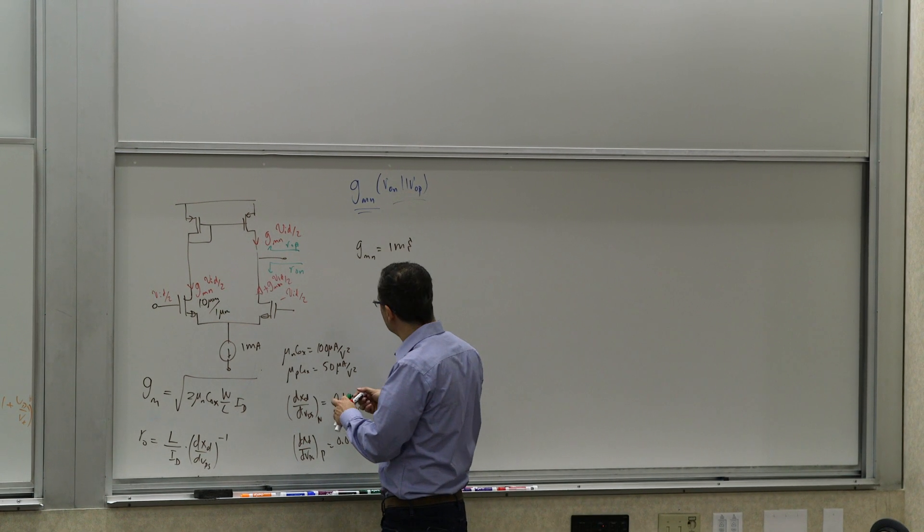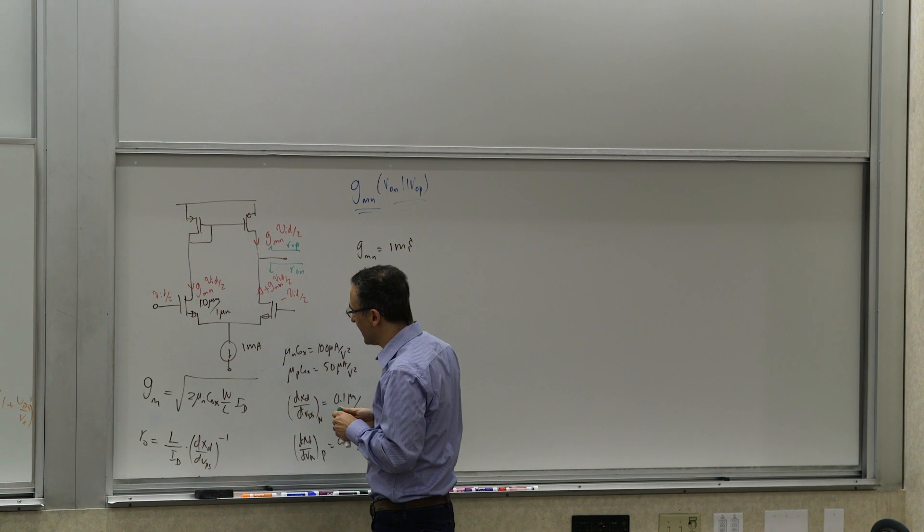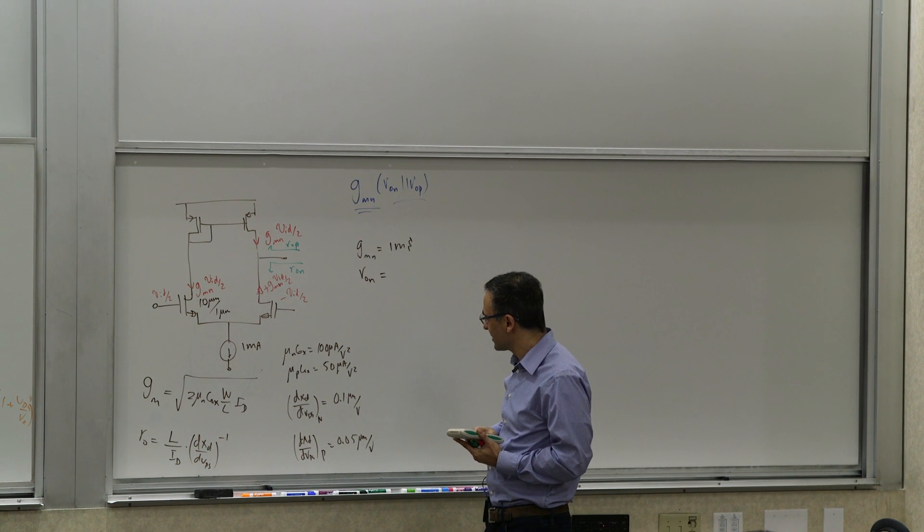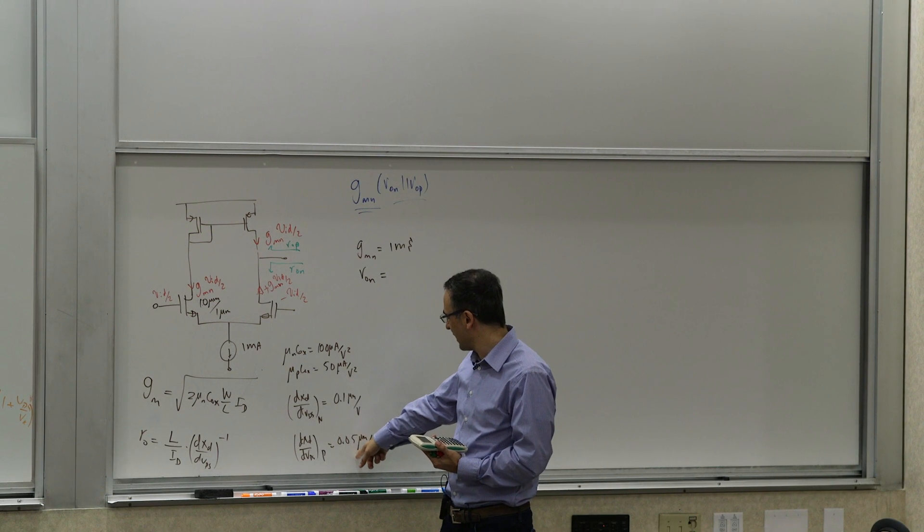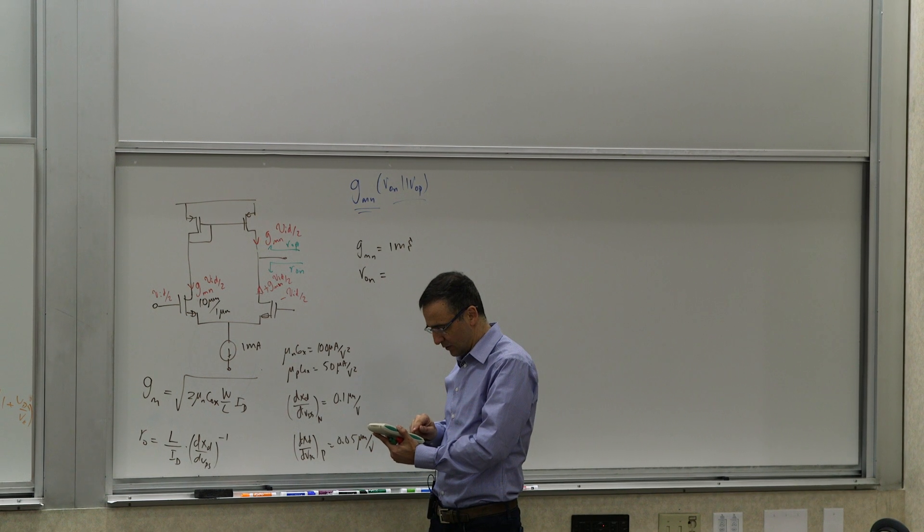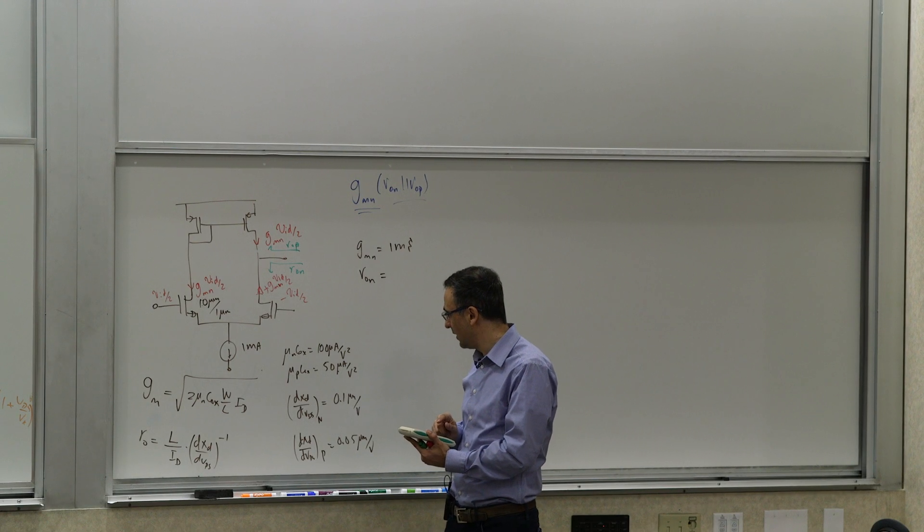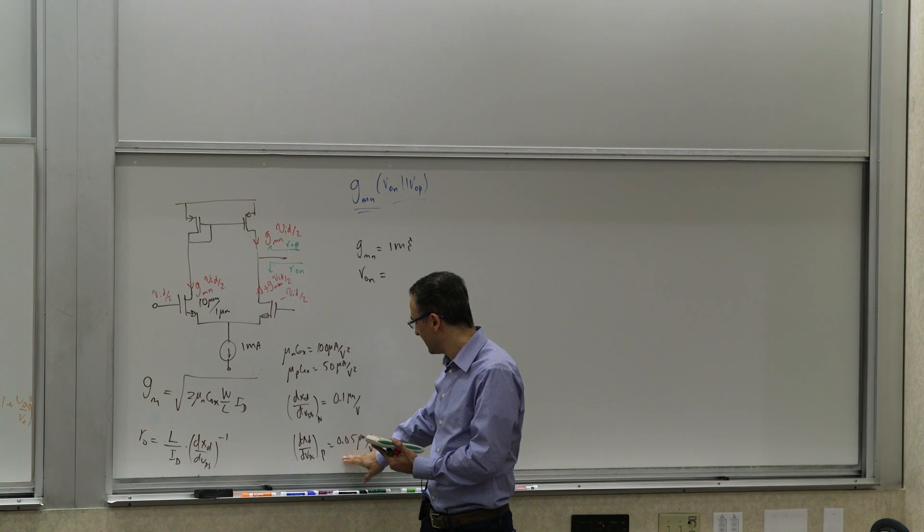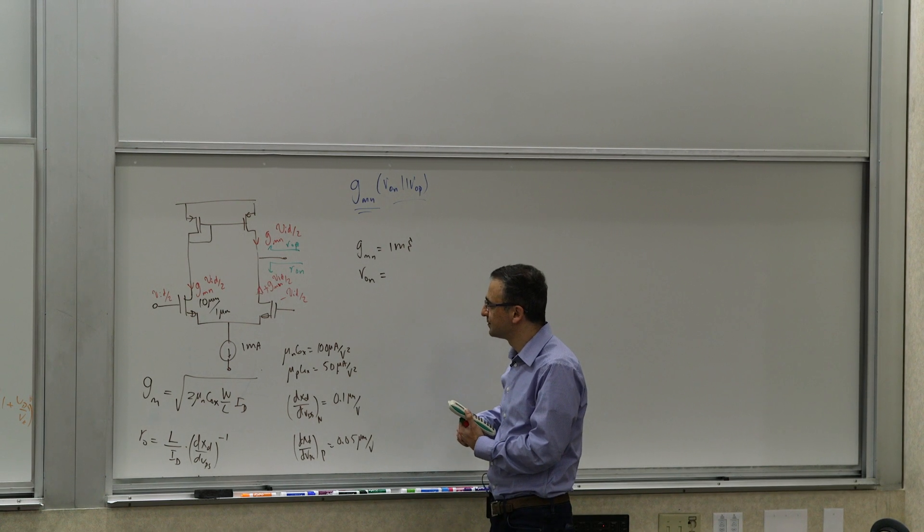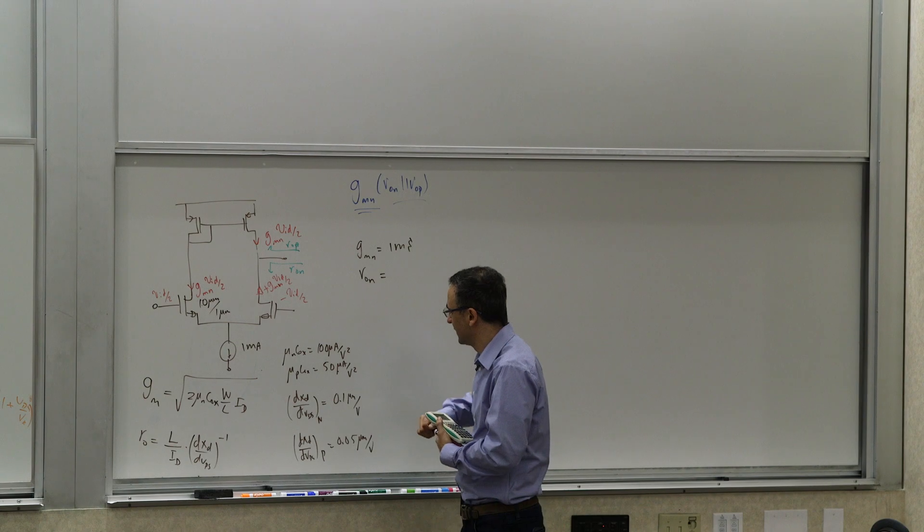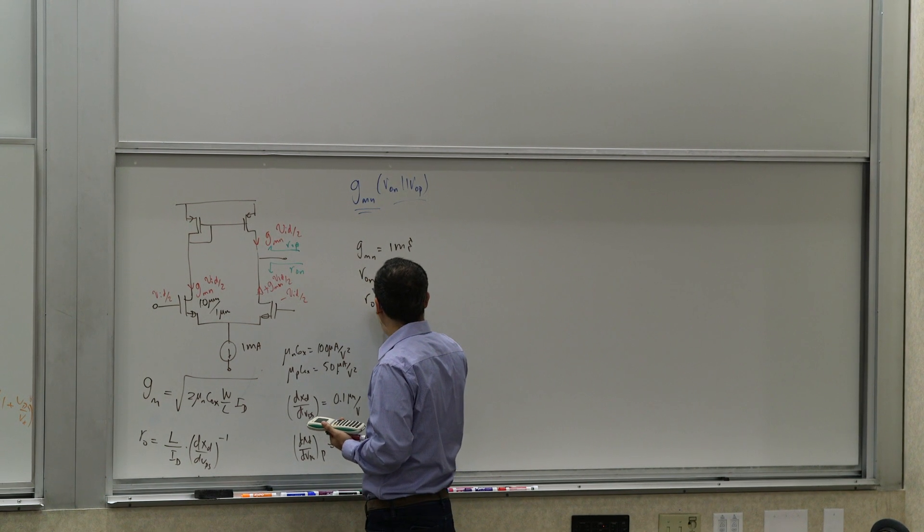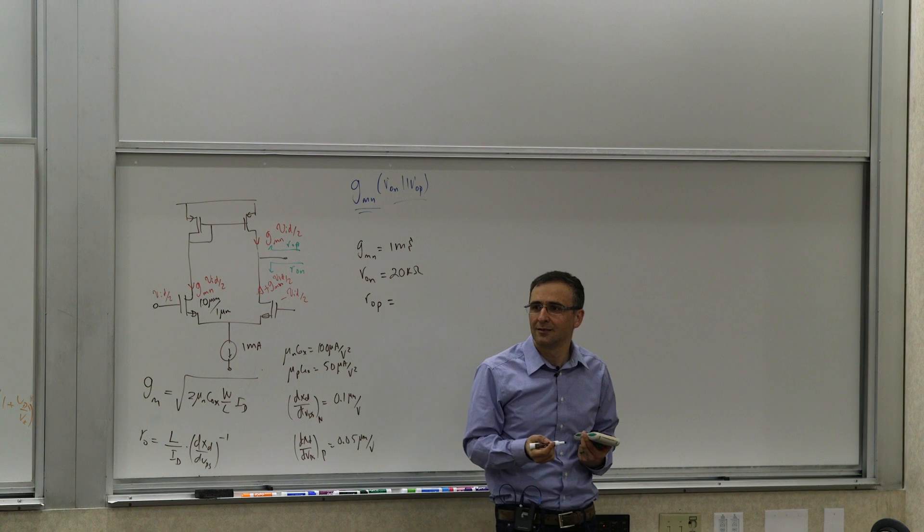Let's say dXD dVDS of 0.1 micron per volt for N, and dXD dVDS for P of 0.05 micrometers per volt. Some very standard classic numbers, just long channel numbers, just to get a feel. So what do we get? Let's do the calculations. Let's say we bias this at 200 microamps. So each side gets, let's do that actually at one milliamp because we did one milliamp for the bipolar just to get a feel of comparison. So if you do have one milliamp, what are the GMs? Well, GM is a function of W over L, so for this one we've picked a GMN is going to be 2 times 100 microamps, 200 microamps, times 10, 2 milliamps per volt squared, times 100 microamps.